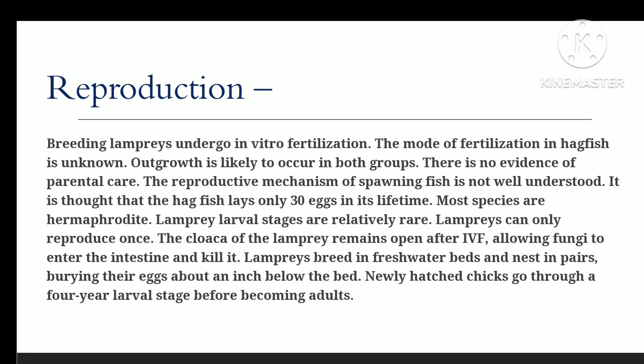Reproduction: lampreys are fertilized externally; the mode of fertilization in hagfish is unknown. External development is most likely occurring in both groups, and there is no evidence of parental care. The reproductive mechanism of hagfish is poorly understood — hagfish are thought to lay just 30 eggs throughout their lifespan, and the majority of species are hermaphrodites.